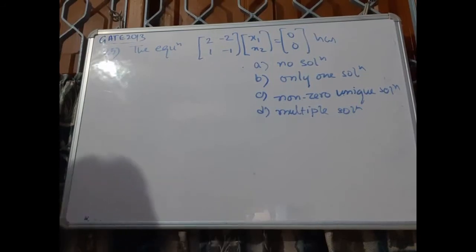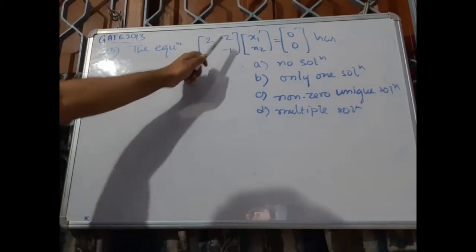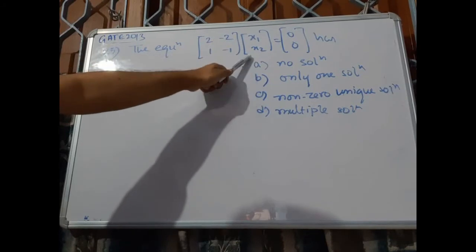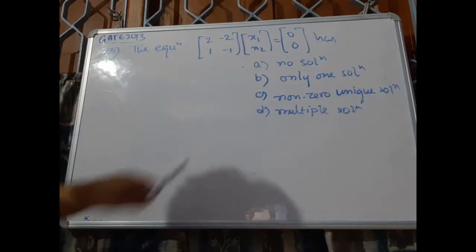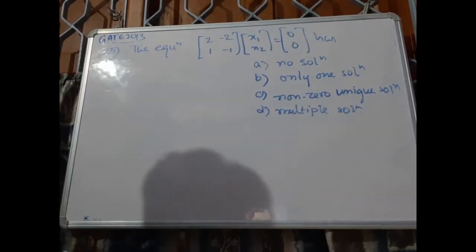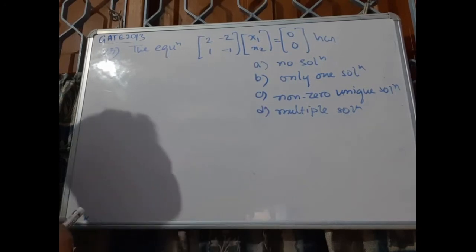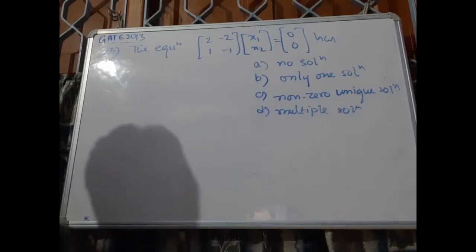This is problem number 25. The equation, with matrix [2, -2; 1, -1] times [x1; x2] equals [0; 0], has the following options: Option A, no solution. Option B, only one solution. Option C, non-zero unique solution. And Option D, multiple solutions.